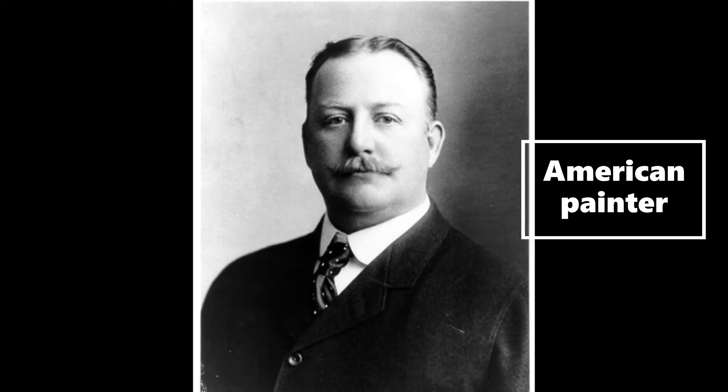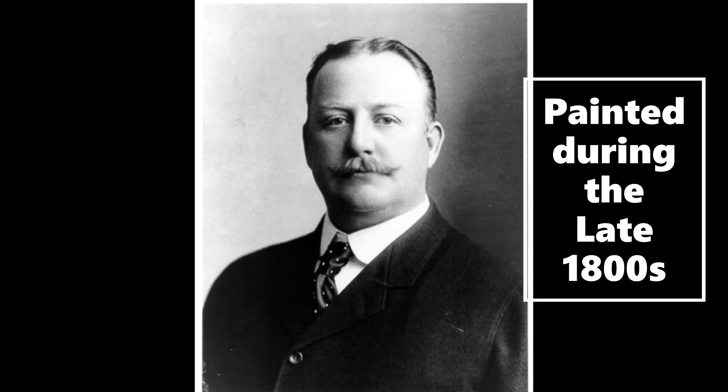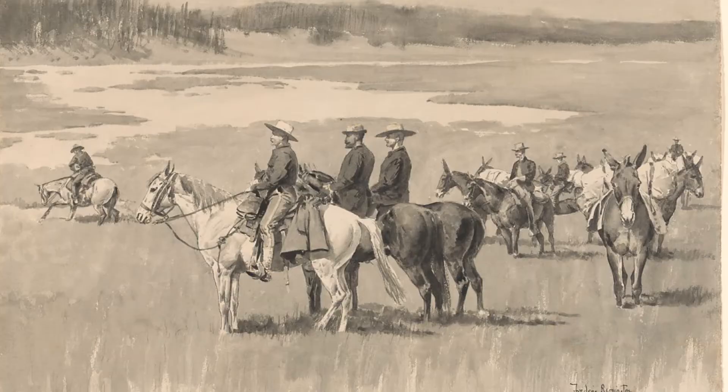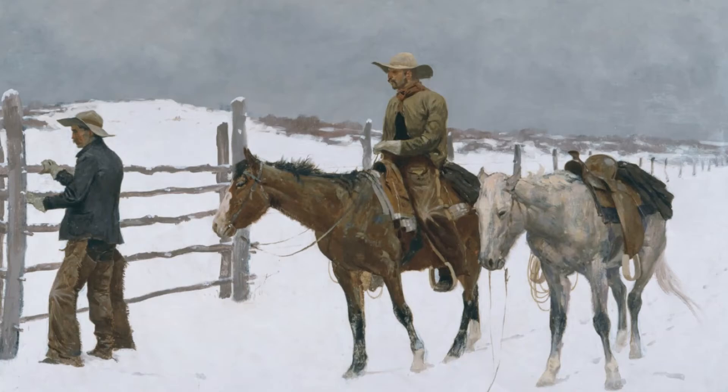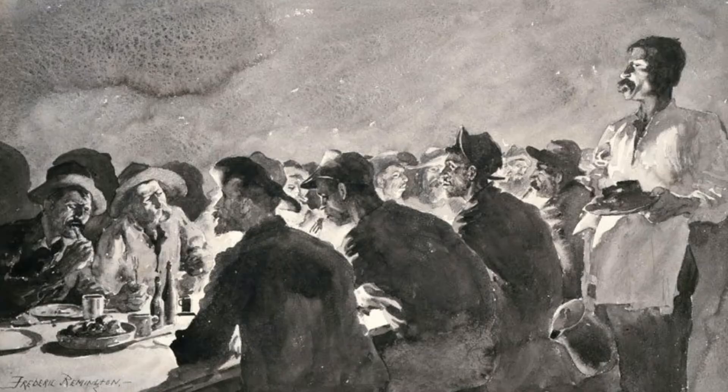Frederick Remington was an American painter. He painted during the late 1800s. He was called a realist. A realist painter paints pictures of people doing everyday tasks like eating dinner.